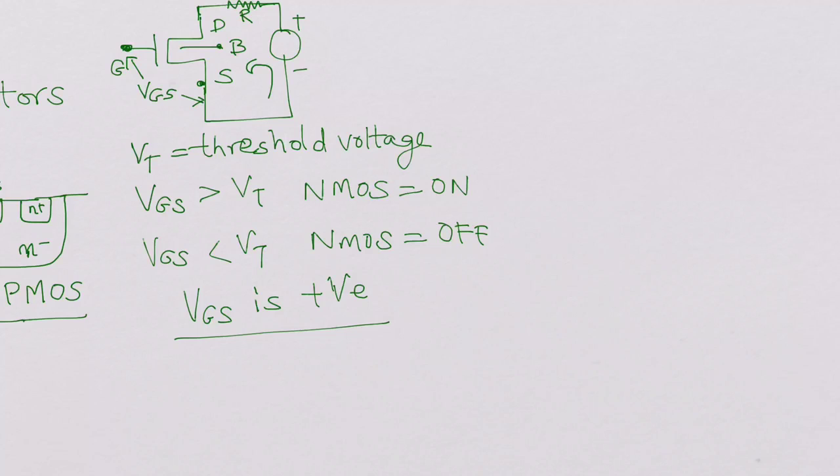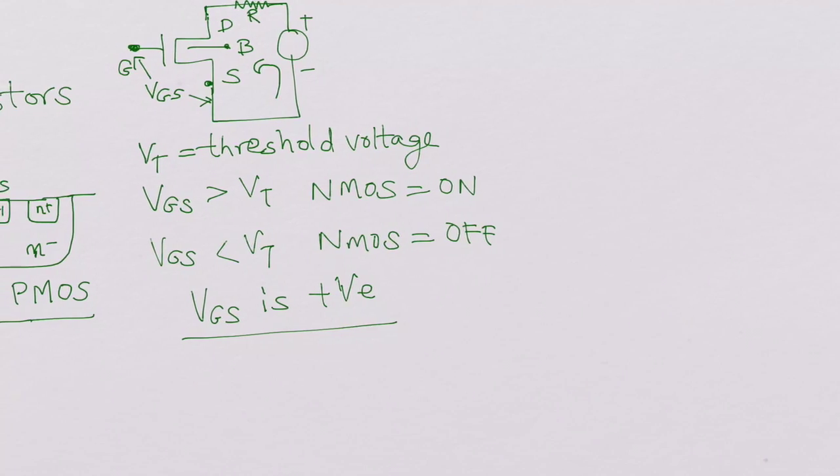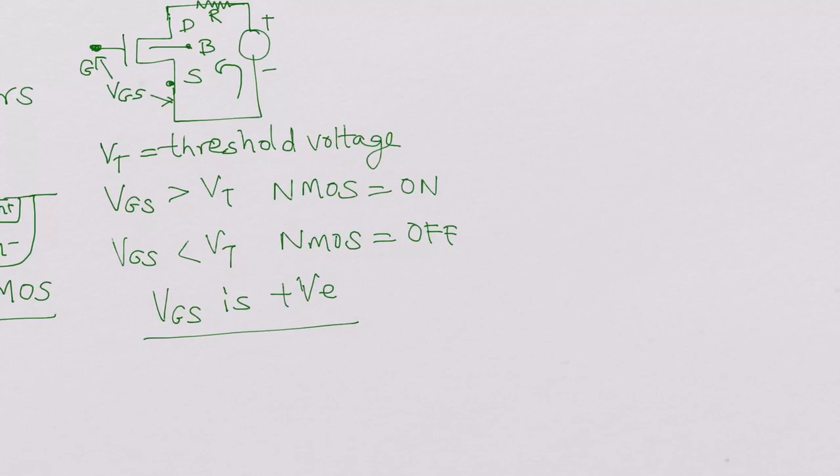Basically, the gate has to be at a higher voltage compared to the source. VGS is positive for the NMOS. Since we are looking at it only more of like a switch, I say on or off. VGS is greater than VT or VGS is less than VT. And usually if the VDD or supply voltage, assume 3 volts.